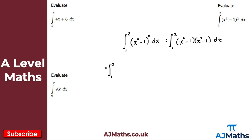Expanding the double brackets: x squared times x squared gives x to the power of 4. Then x squared times minus 1 gives minus x squared, and minus 1 times x squared gives another minus x squared, so in total we have minus 2x squared. Finally, minus 1 times minus 1 gives positive 1. So we're integrating x to the 4 minus 2x squared plus 1 with respect to x.